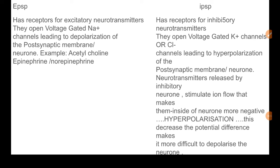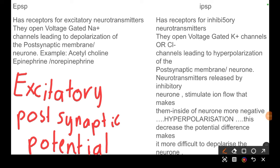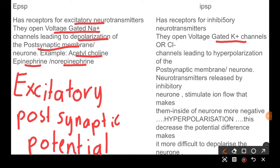We also have the EPSP and the IPSP. The excitatory post-synaptic potential has receptors for excitatory neurotransmitters, which open voltage-gated sodium channels, leading to depolarization of the post-synaptic membrane. Examples include acetylcholine, epinephrine, and norepinephrine. The inhibitory post-synaptic potential has receptors for inhibitory neurotransmitters, makes it harder to depolarize the neuron, causes hyperpolarization, and opens voltage-gated K⁺ or Cl⁻ channels instead.